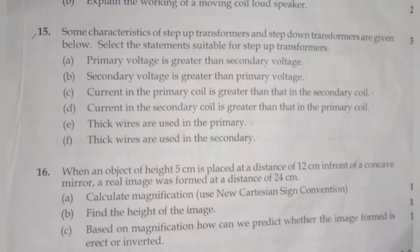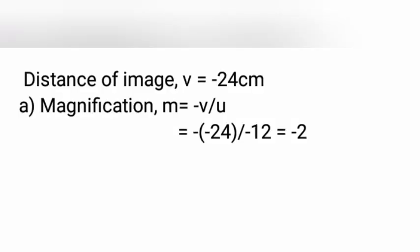16. When an object of height 5 cm is placed at a distance of 12 cm in front of a concave mirror, a real image was formed at a distance of 24 cm. (a) Calculate magnification. Height of object is 5 cm. Distance of object is minus 12 cm. Distance of image is minus 24 cm.